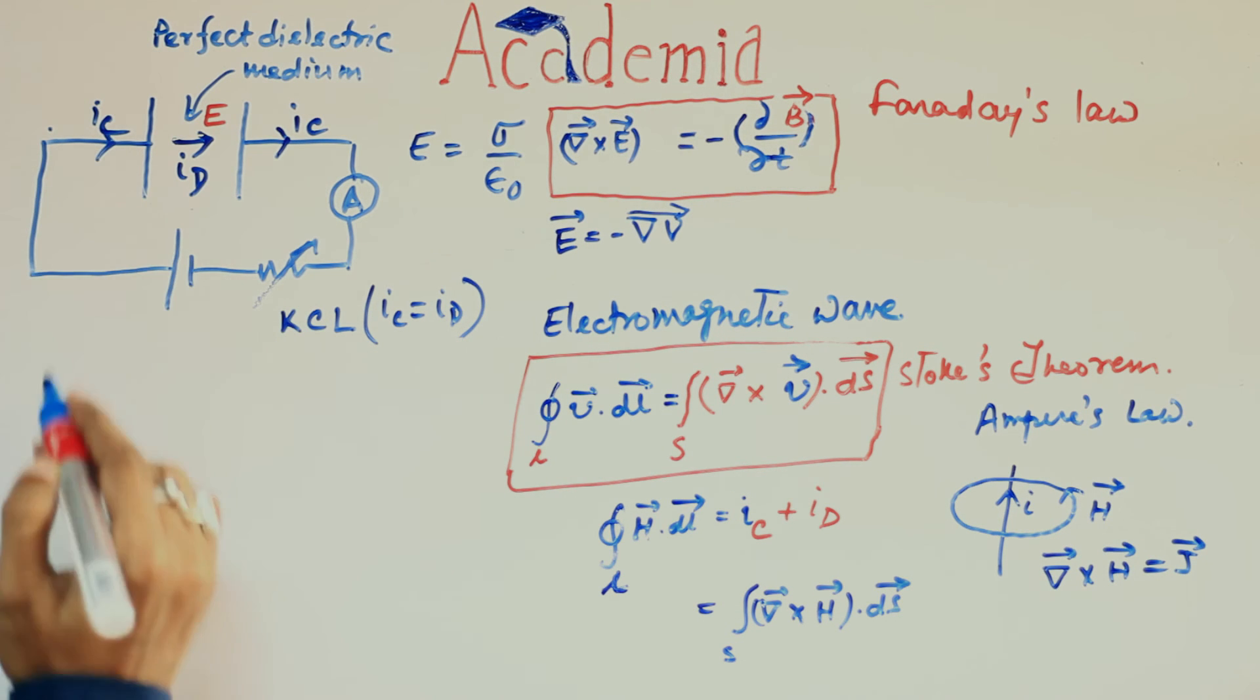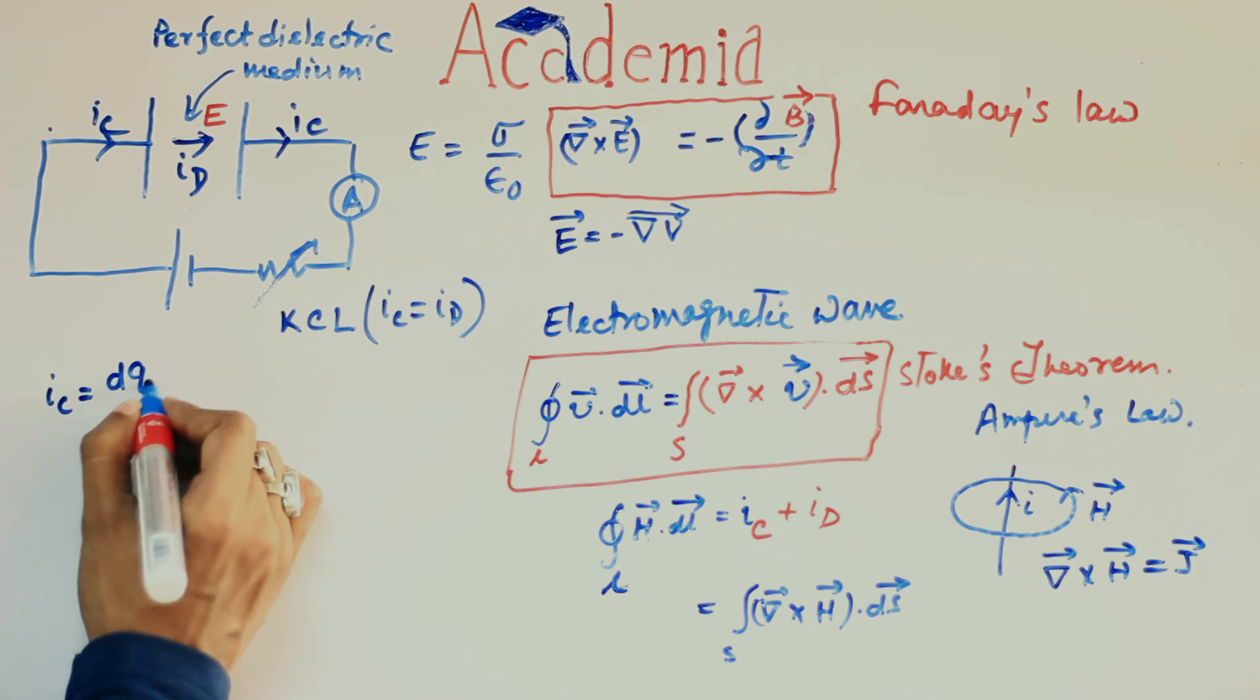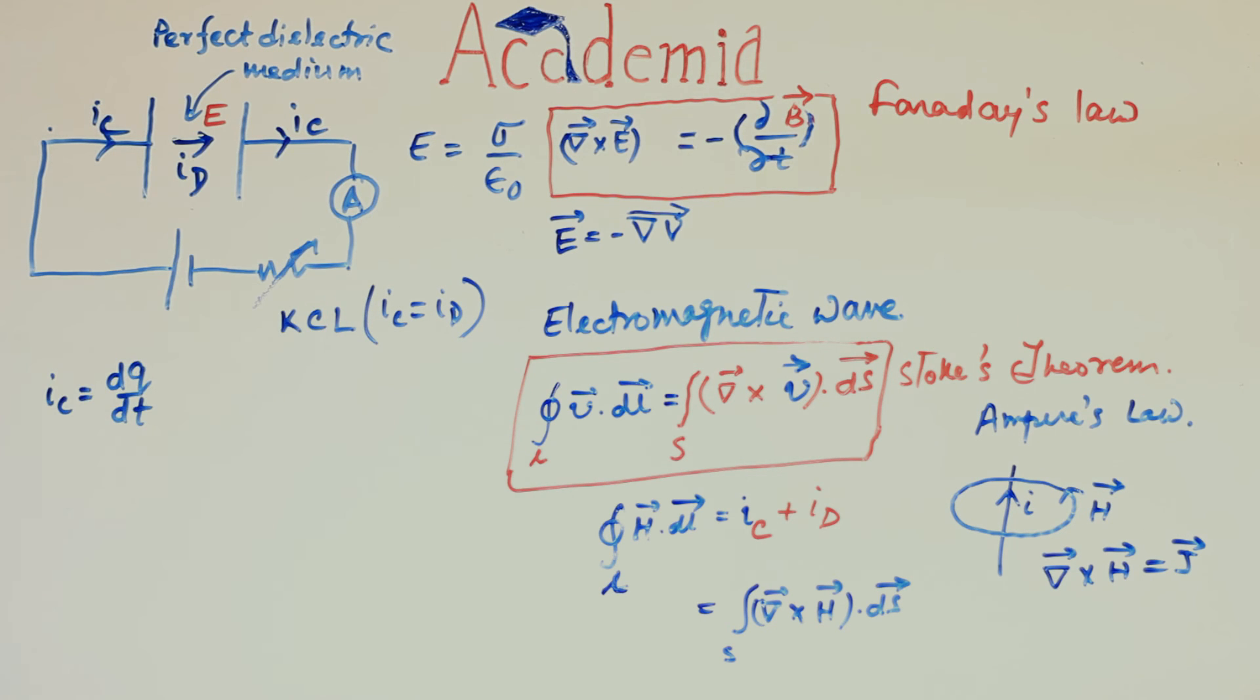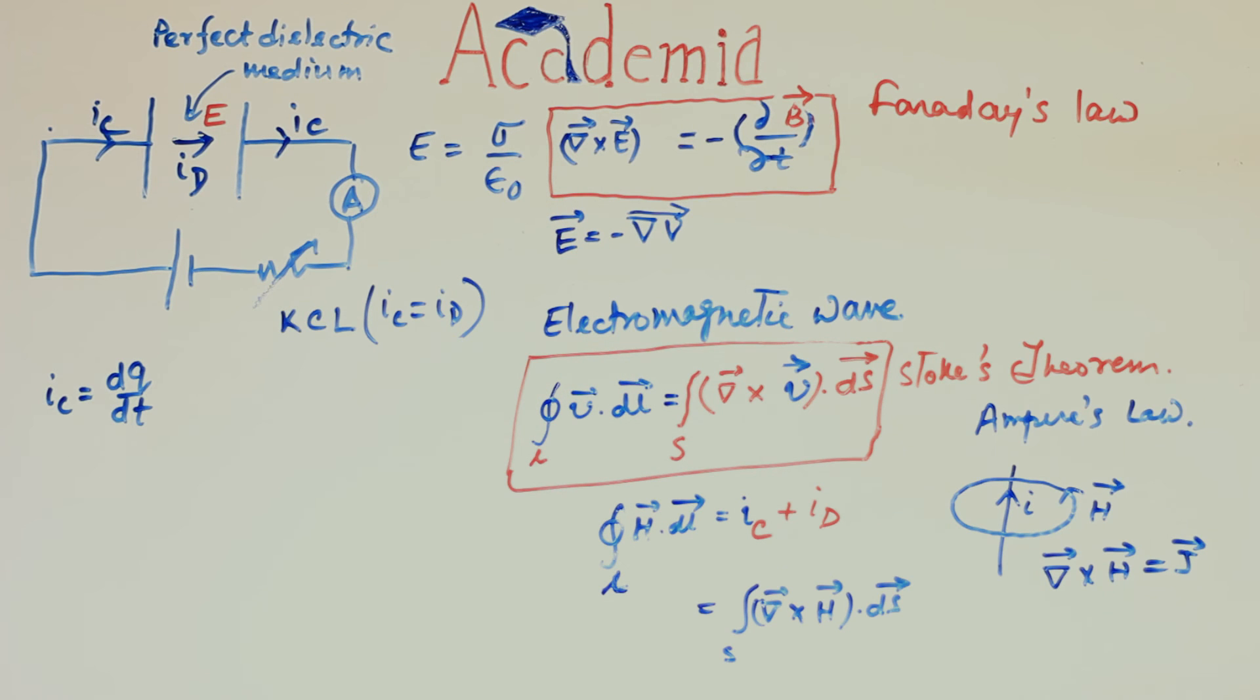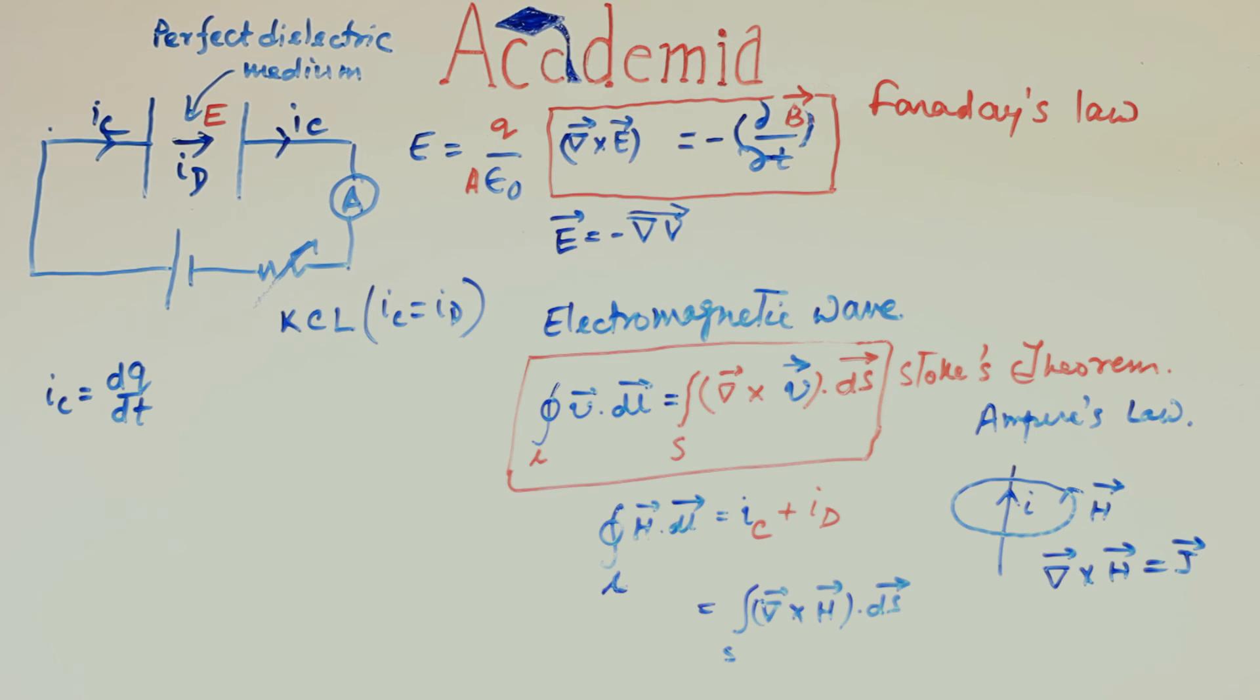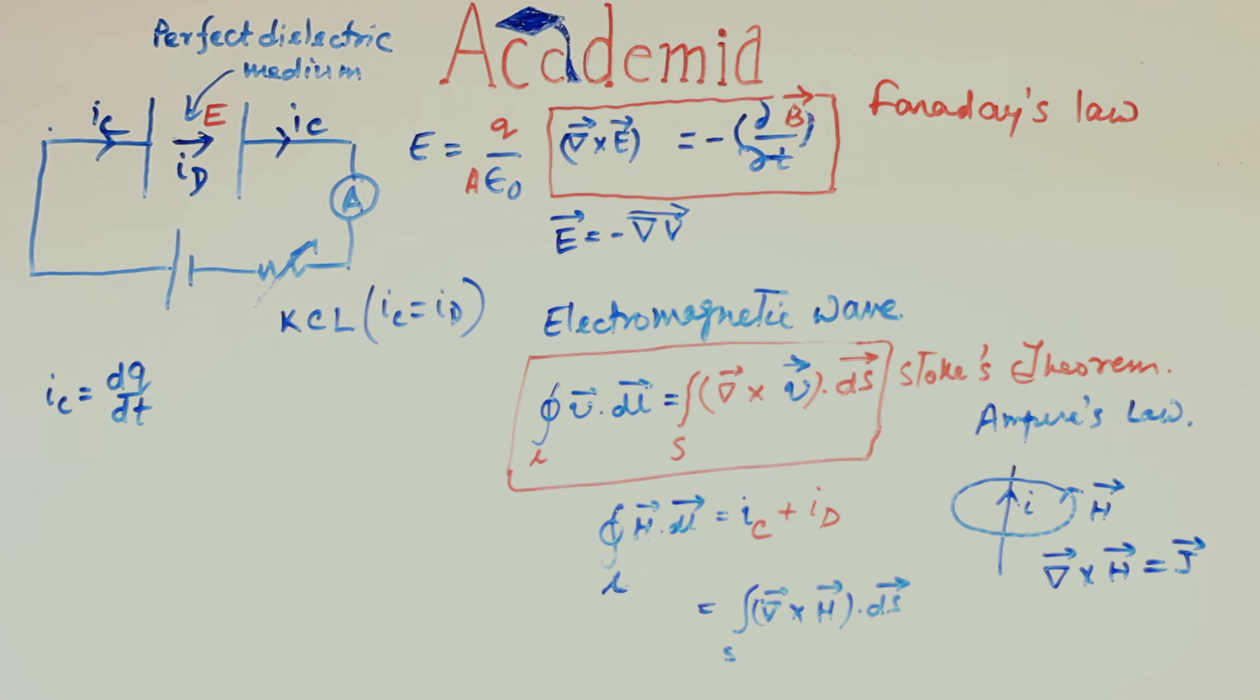IC can be written as IC equals to dq dt. That is, rate of change of charge accumulating on the plates. We also know the electric field between these two plates is E equal to sigma by epsilon0 where sigma is charge density. So, it is charge per unit area, Q by A, A for the area of the plate. So, differentiating both sides with respect to Q, we get this.